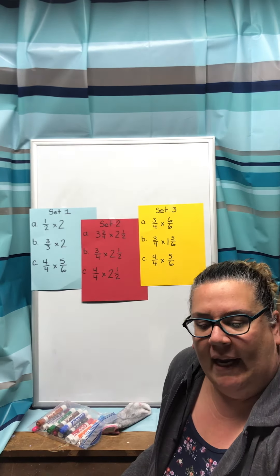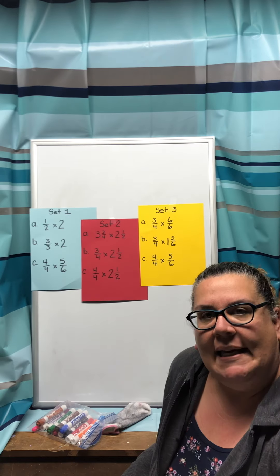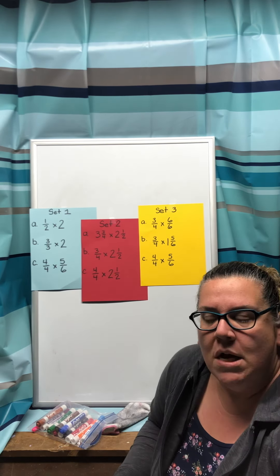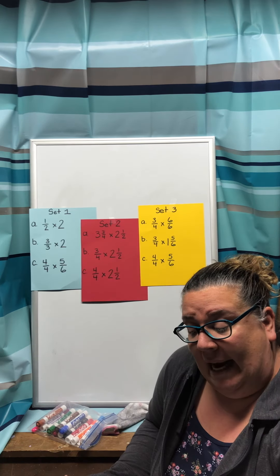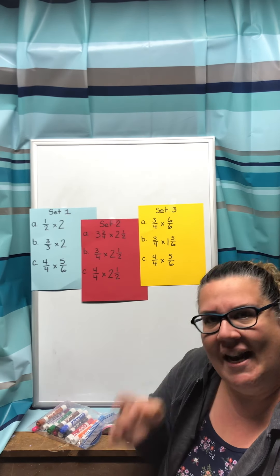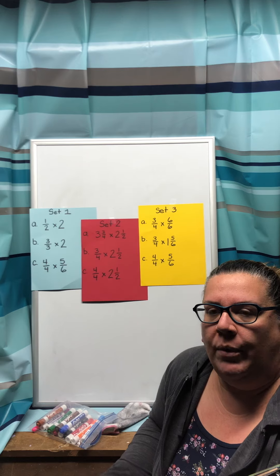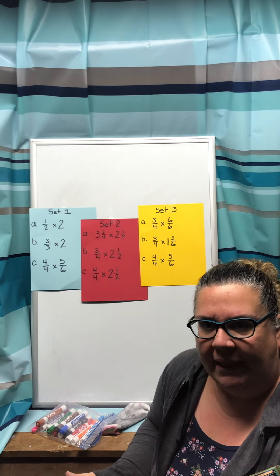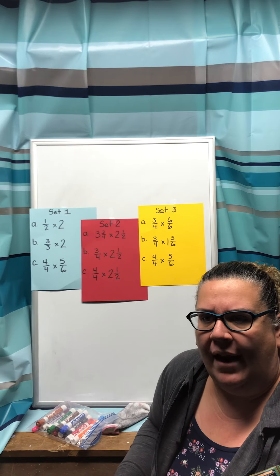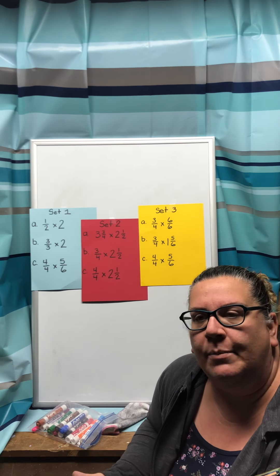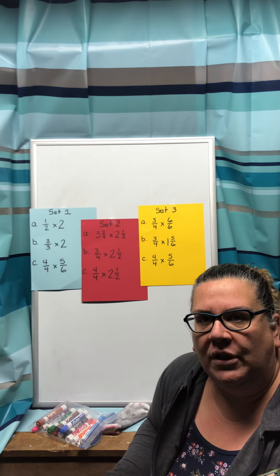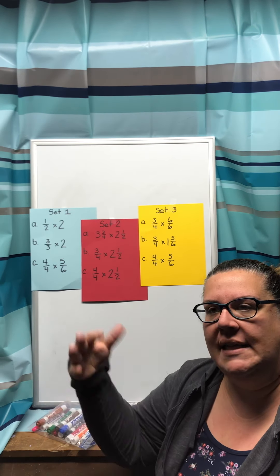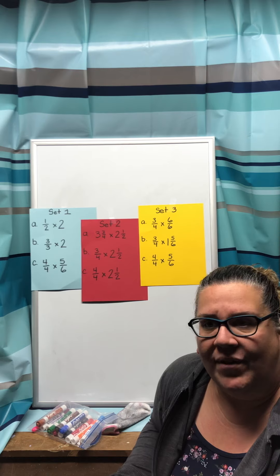Hi guys, we are now in lesson 8-8 and I am looking at page 499. For lesson 8-8 it is called multiplication as scaling. So what we're doing in this lesson — we've already done straight multiplication with fractions, where we had a fraction like one-half times one-third, and we know we're just multiplying our numerators straight across, our denominators straight across, and then deciding if we have to simplify.